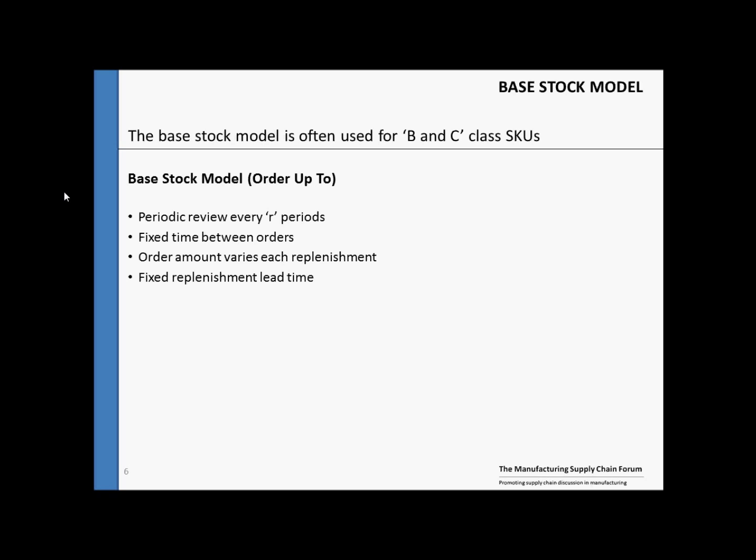Next, we move on to the base stock model. Once again, we have some assumptions. Here we have a periodic review of inventory every R periods. In this model, the order amount varies each replenishment as the amount we order up to varies each time.